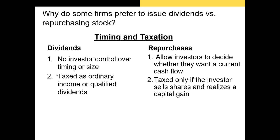In terms of taxation, dividends are going to be taxed either as ordinary income or as qualified dividends. Whereas repurchases are only taxed if the investor sells their shares to the firm and realizes a capital gain — meaning the share price increased during the holding period. For example, if you bought shares at $50 and sold them in a repurchase for $60, you owe capital gains tax on that additional $10.